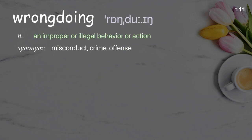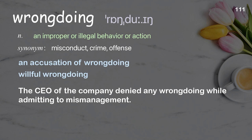Wrongdoing: An improper or illegal behavior or action. Examples: an accusation of wrongdoing, willful wrongdoing. The CEO of the company denied any wrongdoing while admitting to mismanagement.